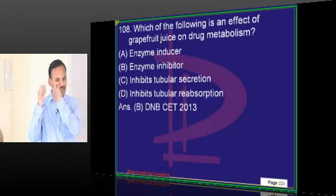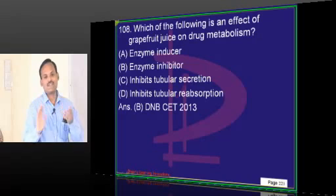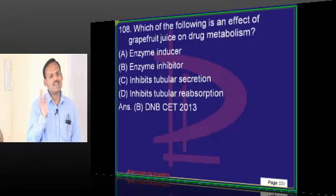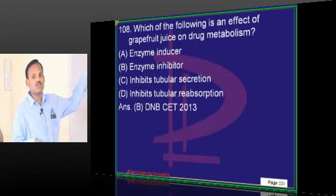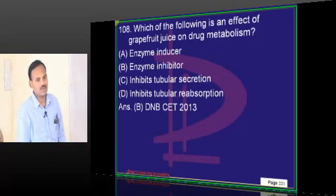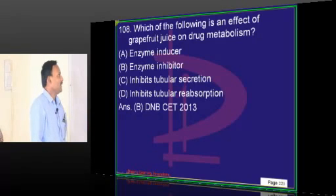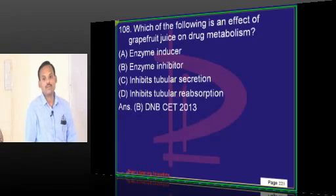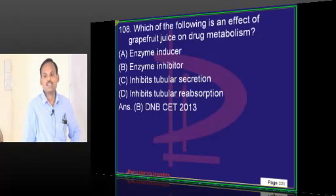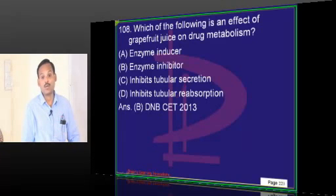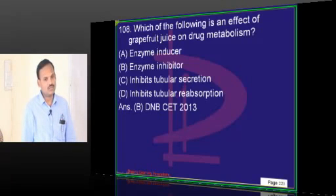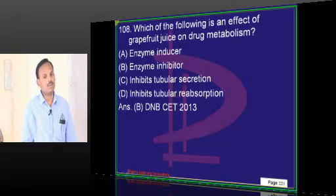Grapefruit juice has the ability to inhibit cytochrome P450 enzymes — it is an enzyme inhibitor. In western countries where people use grapefruit juice, if they are using some medications, they should be careful. Especially immunosuppressants like cyclosporine, tacrolimus, sirolimus — they are metabolized by CYP3A4 and are generally given with fruit juice. If someone takes these with grapefruit juice, they will have severe immunosuppression, increasing the risk of bacterial, viral, and fungal infection.